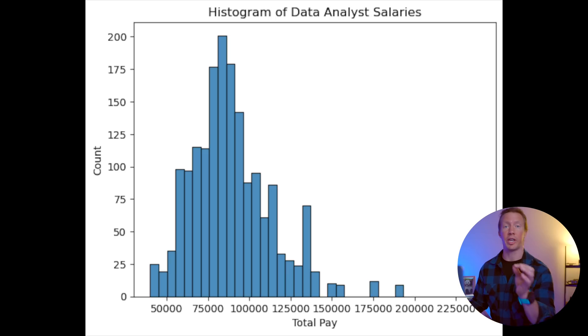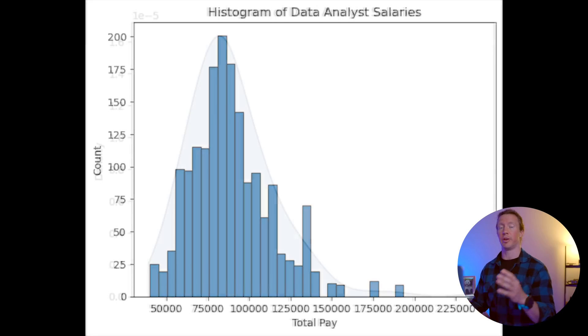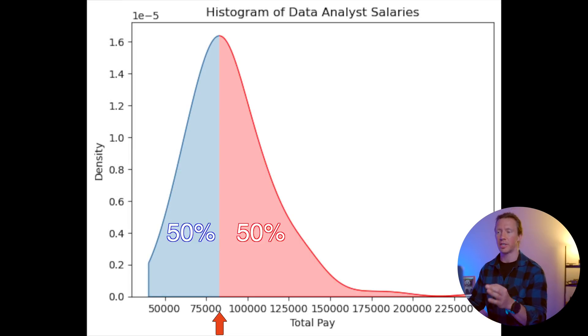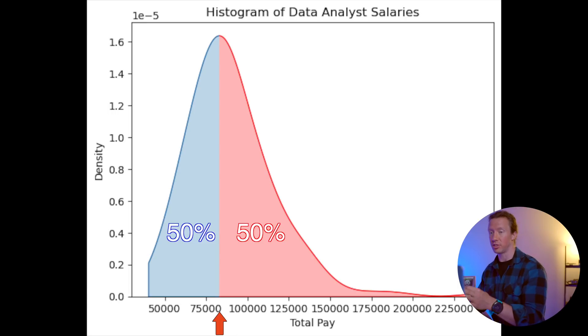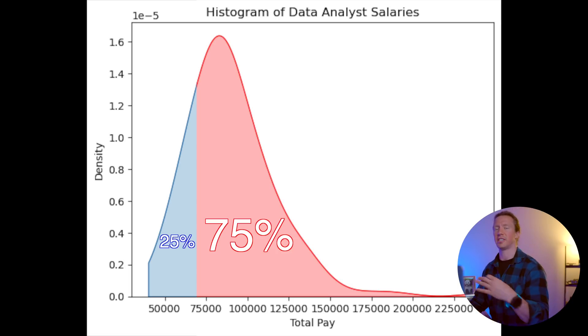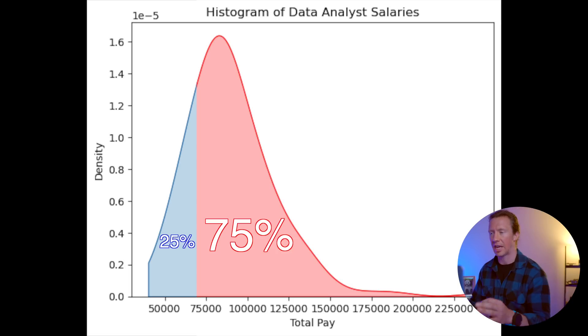So what does this all mean? We can use this data to infer the probability of a data analyst's salary. If you're a data analyst, there's a 50% chance that your salary is greater than $85,000. One quick reminder — this is for all level data analysts, not just entry-level. Or another way to look at this is that there's a 75% chance that the salary is above $72,800.